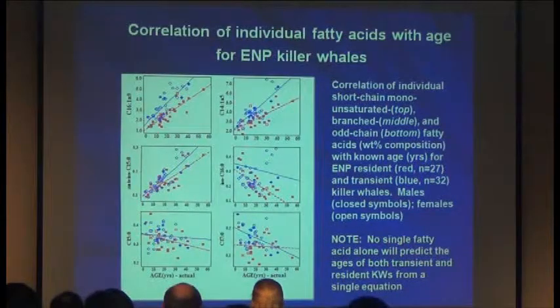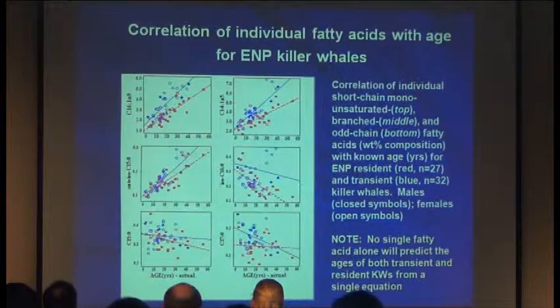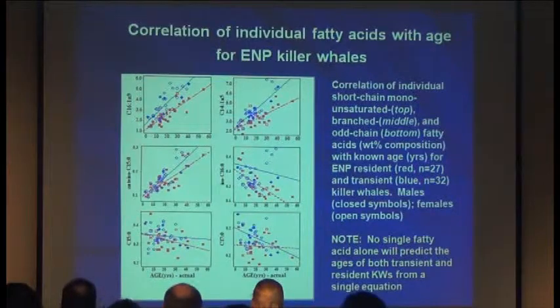So he decided to start looking at fatty acids. He looked at individual fatty acids using GC mass spectrometry to measure these compounds, examining anywhere between 65 to 80 fatty acids in the blubber samples. He found correlations of individual short and medium chain monounsaturates, branch chain and odd chain fatty acids with known ages for eastern North Pacific resident and transient killer whales, but there were differences between the two ecotypes.